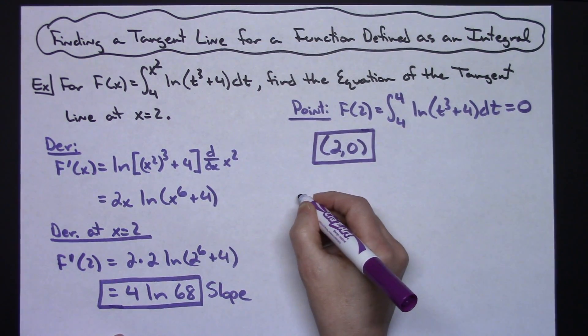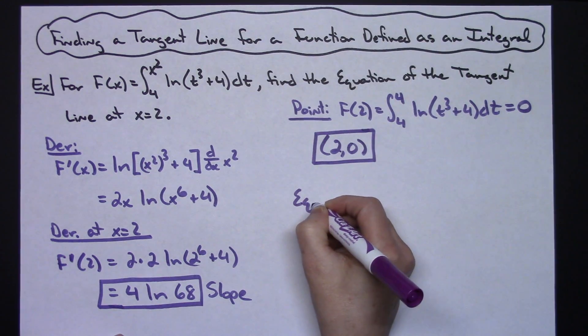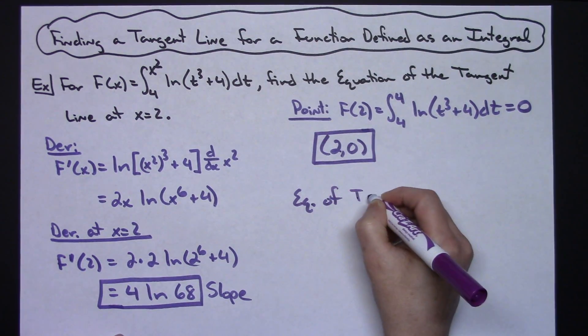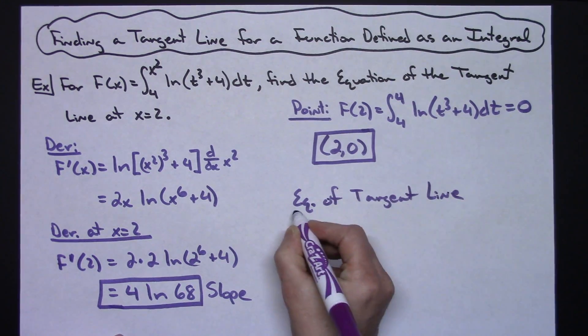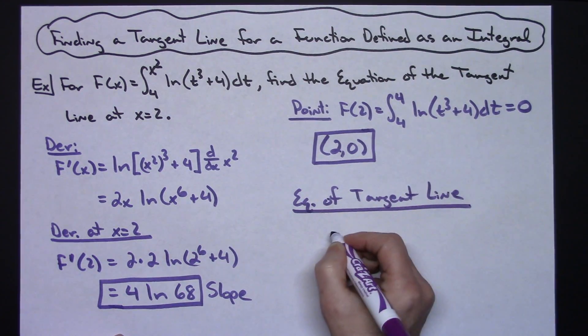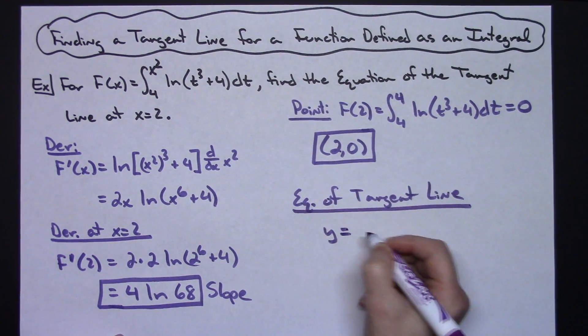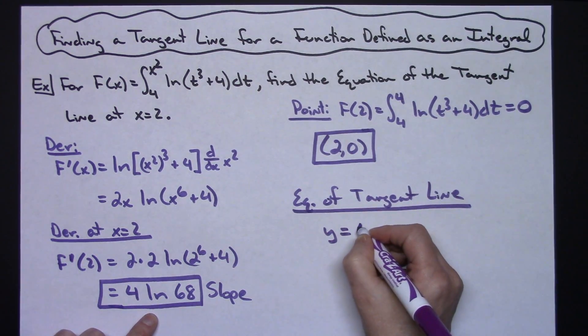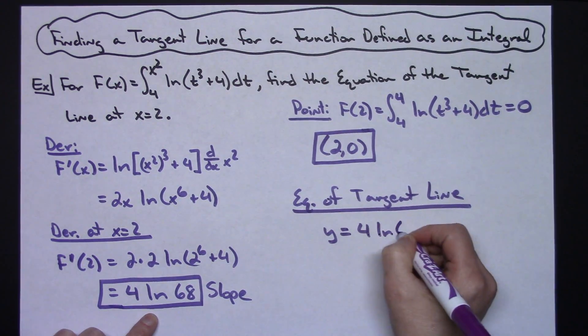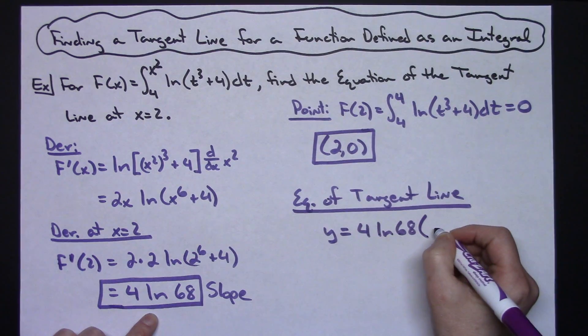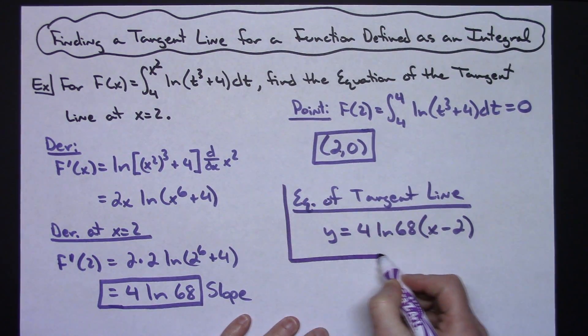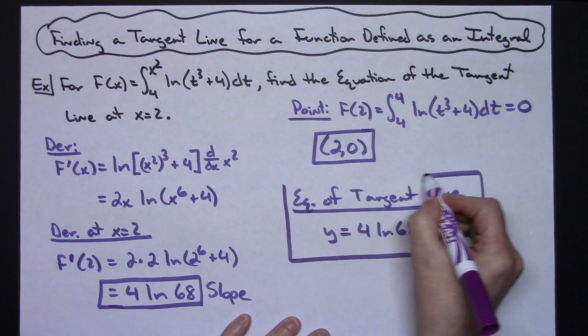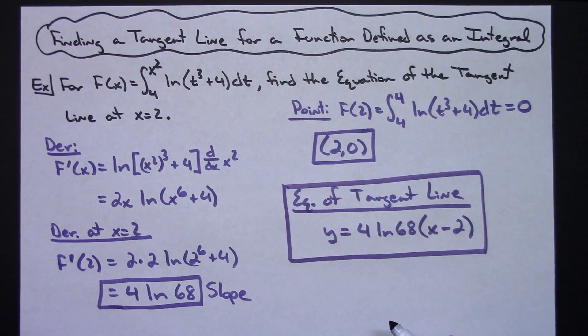So now I'm going to use this point and this slope and write my equation of the tangent line in point-slope form. Equation of tangent line: y minus 0, so I'm just going to leave it as y equals the slope, 4 natural log of 68, times x minus 2. So there is the equation of the tangent line of a function that was defined originally as an integral.